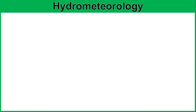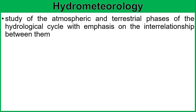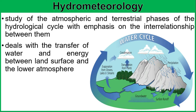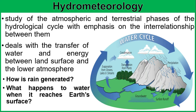Let's start with the definition of hydrometeorology. Hydrometeorology is the study of atmospheric and terrestrial phases of the hydrological cycle, with emphasis on the interrelationship between them. The water cycle is shown here. Basically, hydrometeorology deals with the transfer of water and energy between the land surface and the lower atmosphere. Here, we're going to discuss how rain is generated and what happens when it reaches the surface.